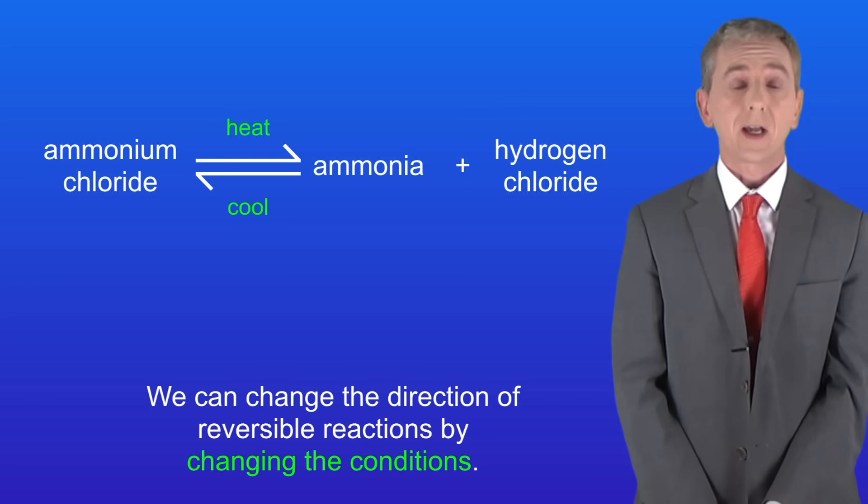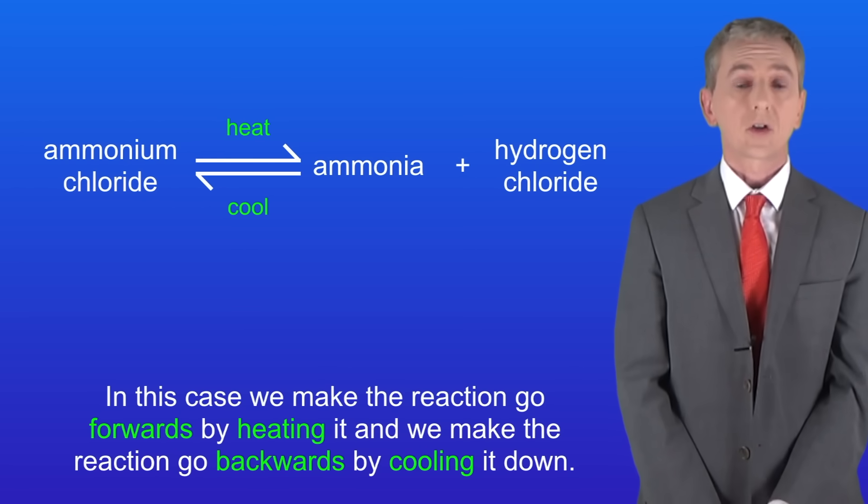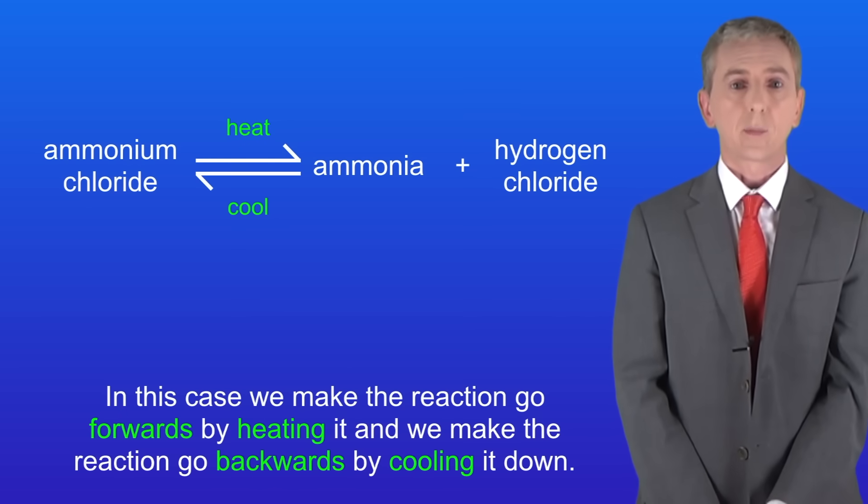We can change the direction of reversible reactions by changing the conditions. So in this case we make the reaction go forwards by heating it, and we make the reaction go backwards by cooling it down.